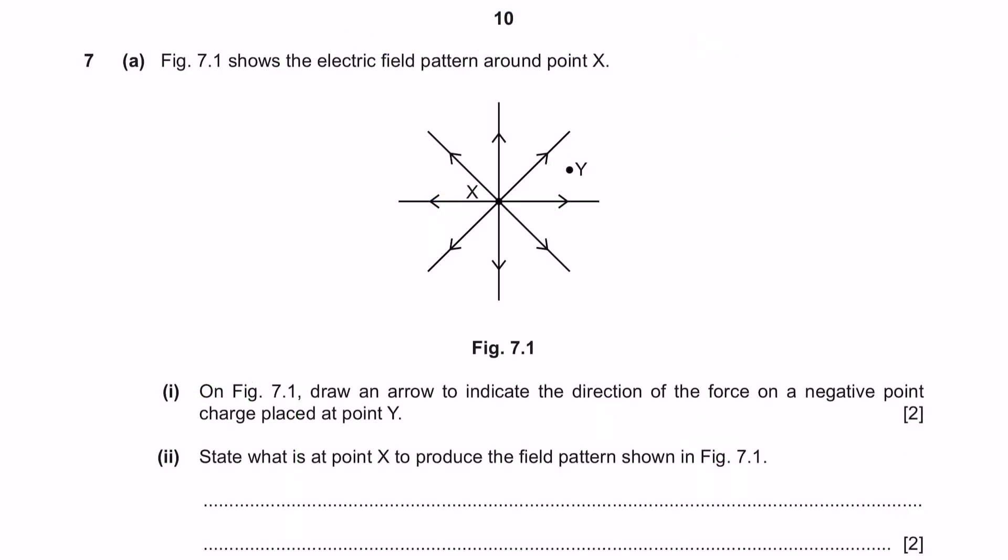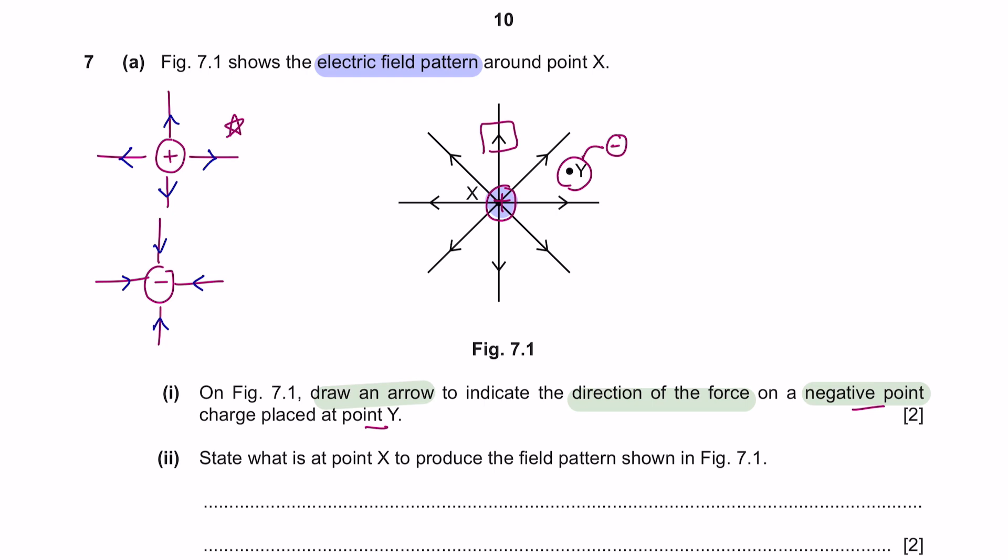Question 7, Part A. Figure 7.1 shows the electric field pattern around point X. Part 1, on figure 7.1, draw an arrow to indicate the direction of the force on a negative point charge placed at point Y. A charged object creates an electric field around itself. In the question here, we are given that the arrow is pointing outwards, meaning that this must be a positive charge. And a negative point charge is placed at Y. The direction of the force would go inwards like this.